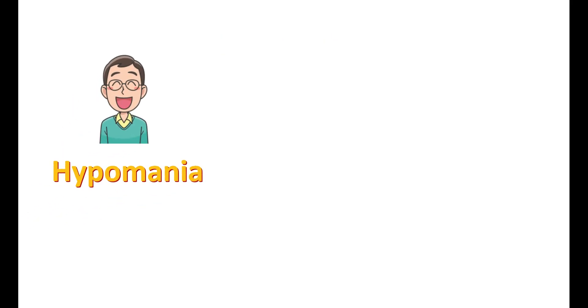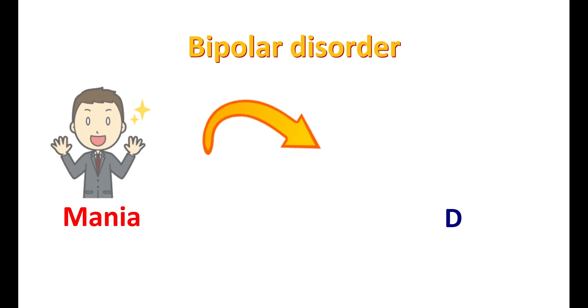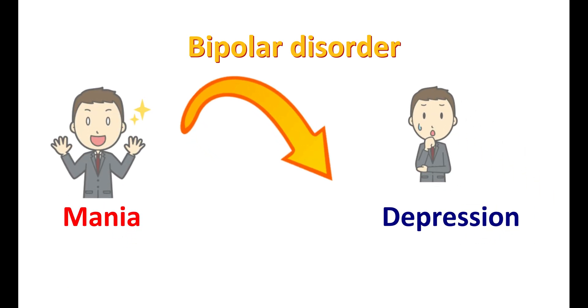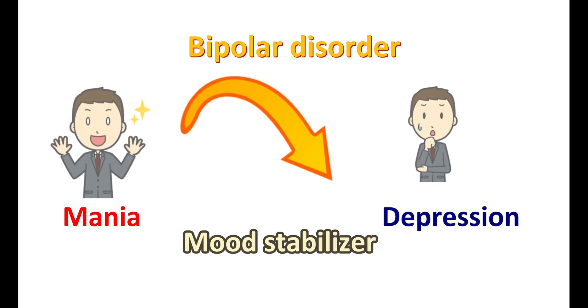Hypomania is another condition just like mania but with milder symptoms. In bipolar disorder, the mood of people may swing from mania to depression or depression to mania. Mood stabilizers can be used to control these mood swings. Some mood stabilizers mainly affect the manic phase, whereas others mainly affect the depressive phase.